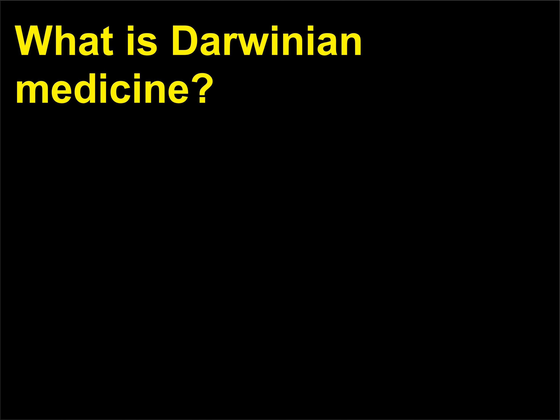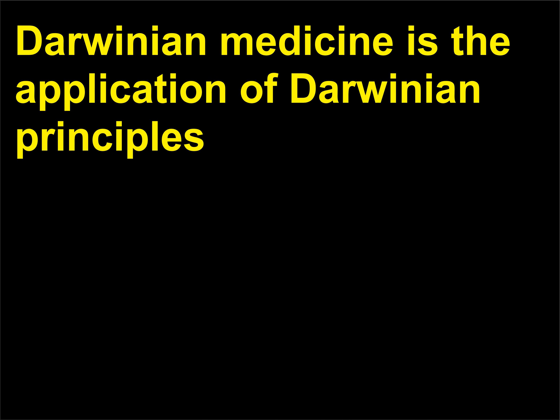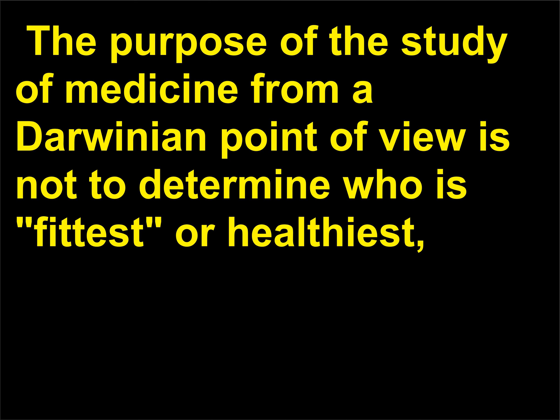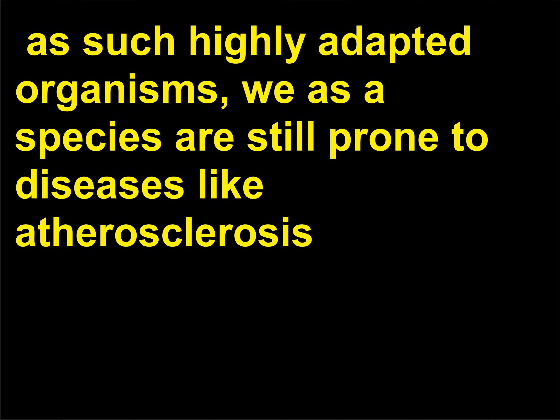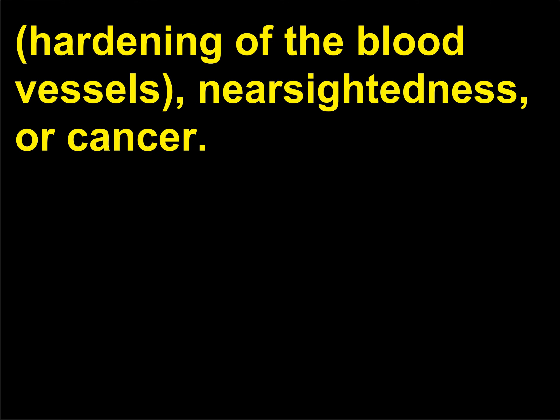What is Darwinian medicine? Darwinian medicine is the application of Darwinian principles — descent with modification via natural selection — to the disease process. The purpose is not to determine who is fittest or healthiest, but instead to determine the evolutionary underpinnings of why, as such highly adapted organisms, we as a species are still prone to diseases like atherosclerosis (hardening of the blood vessels), nearsightedness, or cancer.